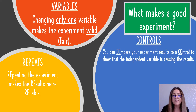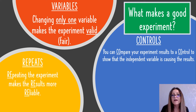Finally, most good experiments in biology should have a control. A control is an experiment that you set up to compare your experimental results to - one where you've taken away the independent variable. It's good for showing that what you're changing is actually having the effect.